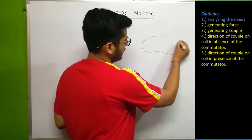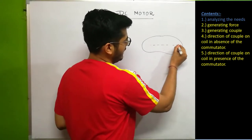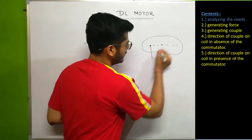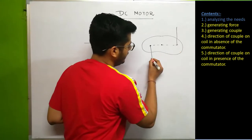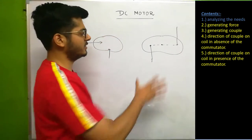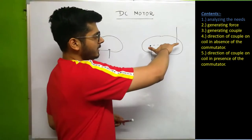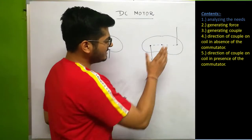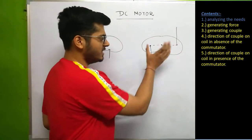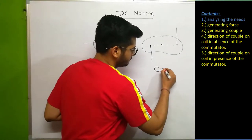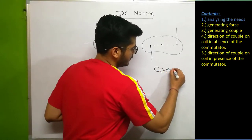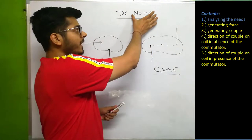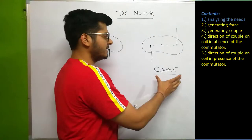Now let's take this case. The body is there, free to rotate about a particular point, and now we are applying two forces which are equal, opposite, and parallel to each other. What happens under the action of these two forces? The body tries to rotate. This system of two forces is called a couple. So our first principle is clear: if you want to create a motor, the first thing we need to create is a couple.